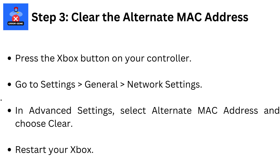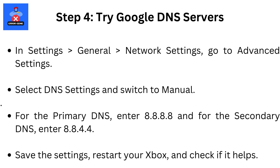Step 4: Try Google DNS servers. In Settings, then General, then Network Settings, then Advanced Settings, select DNS Settings and switch to Manual. For the primary DNS, enter 8.8.8.8. And for the secondary DNS, enter 8.8.4.4. Save the settings, restart your Xbox, and check if it helps.